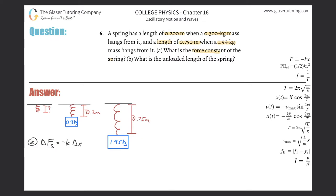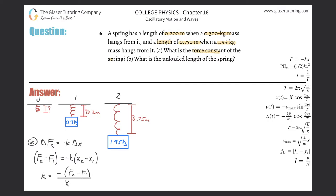Let me not complicate this too much. I can take the force the spring is exerting in the second case and subtract the force in the first case, and that will equal negative k times the displacement in the second case minus the displacement in the first case. To solve for k, I algebraically rearrange: k equals negative the force in the second case minus the force in the first case, all divided by the change in displacement between the two cases.